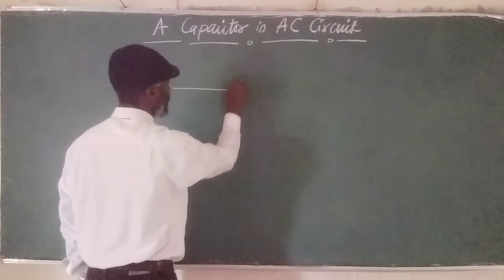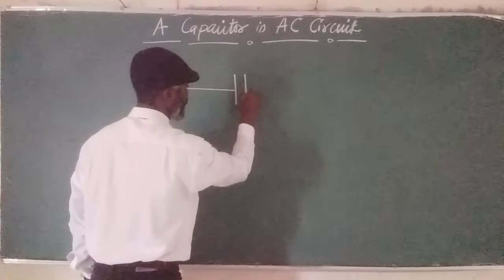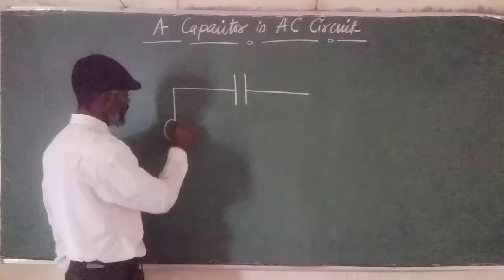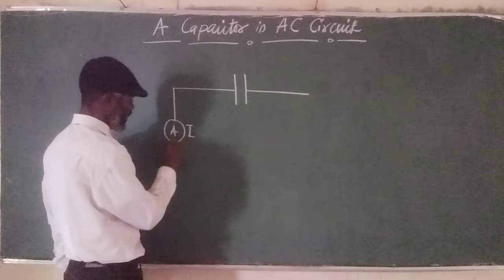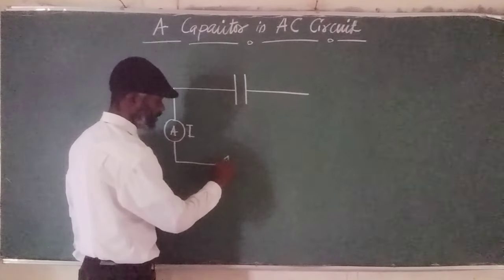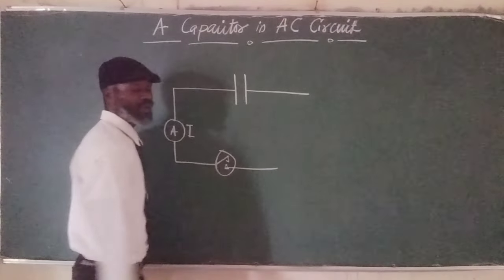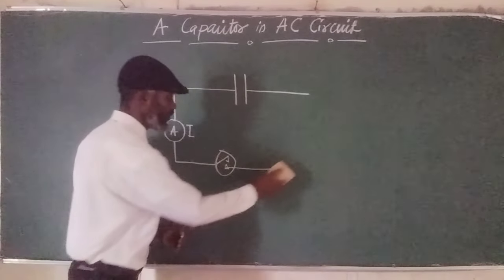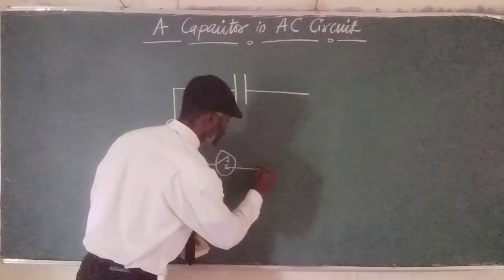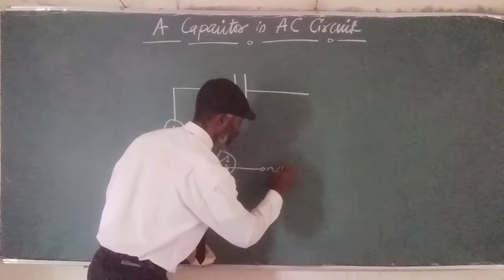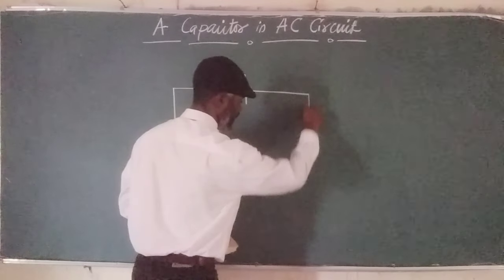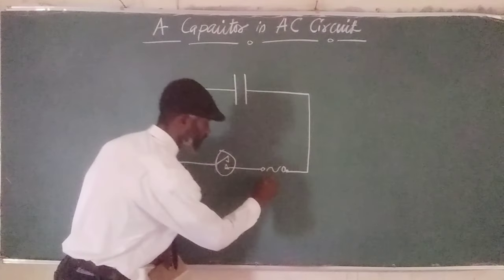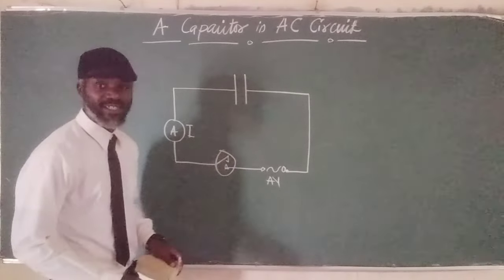Diagram of a capacitor connected in an AC circuit is what I'm doing now. We bring down this ammeter that will measure current flowing. This is our key. We have a source of AC power supply at this point, with this symbol. Of course, we are talking about AC. We have our diagram complete. This is AV — an alternating voltage.